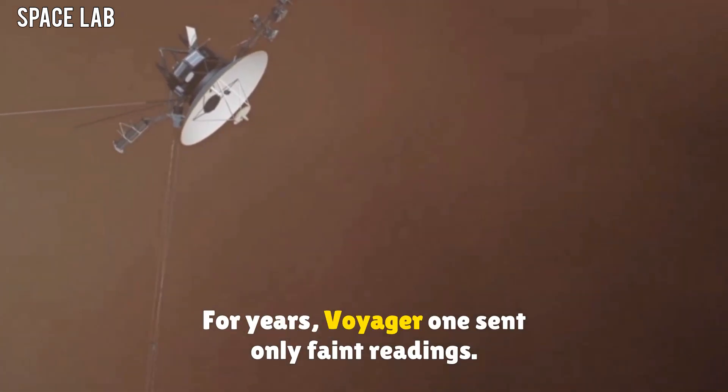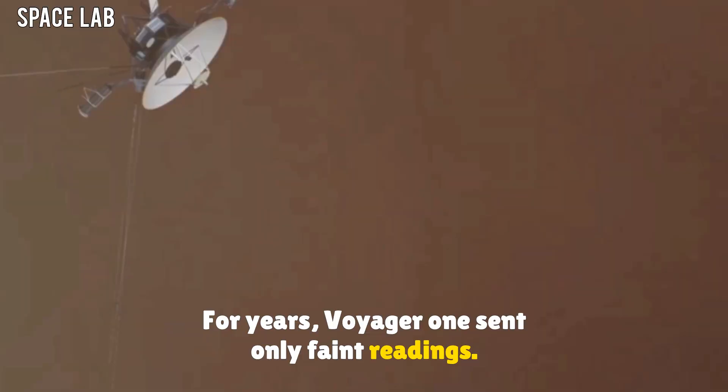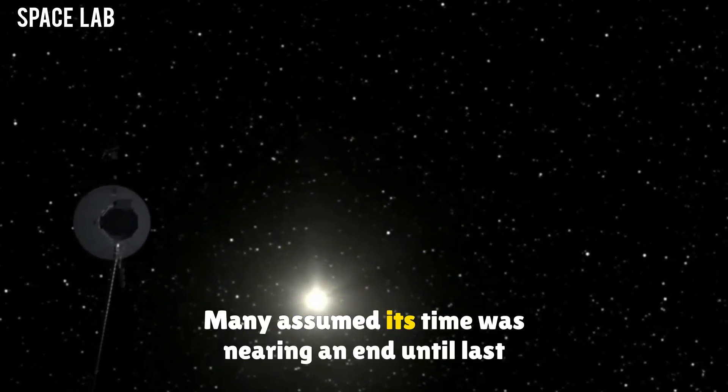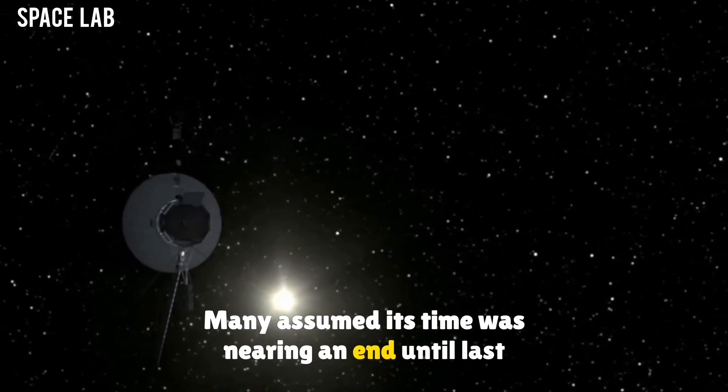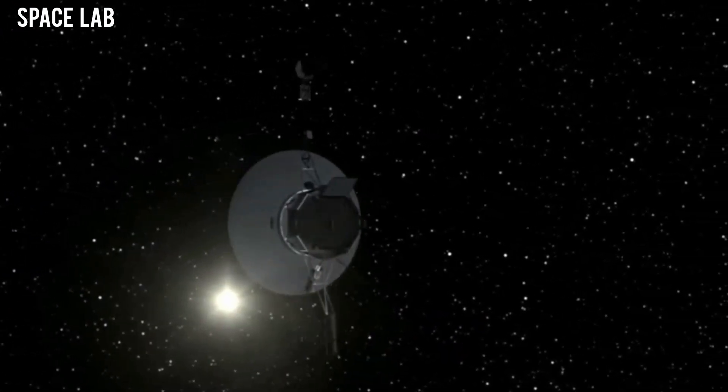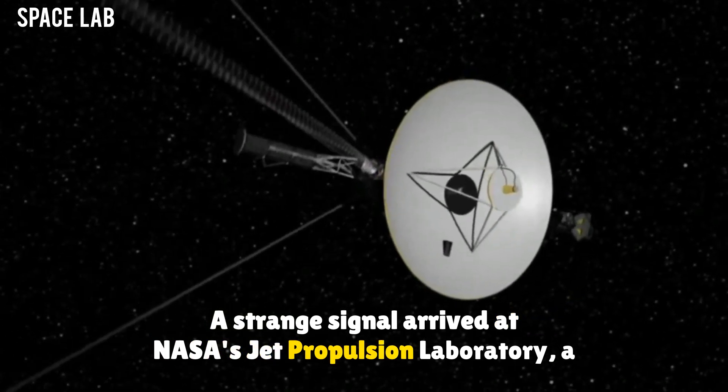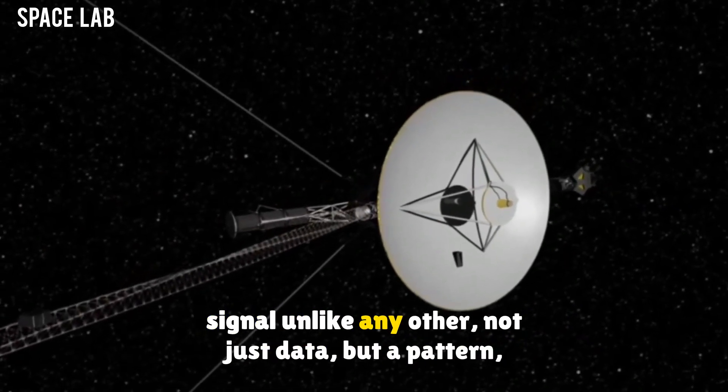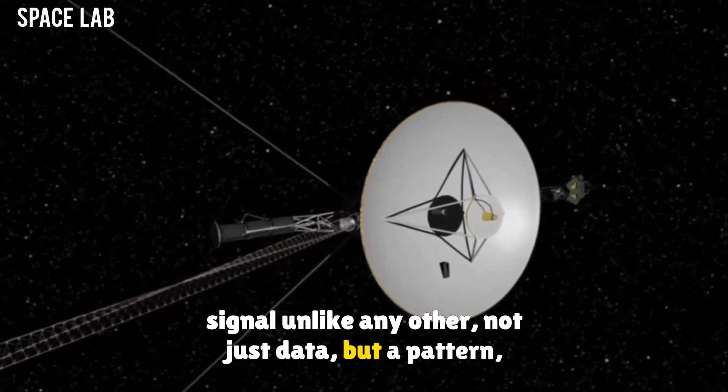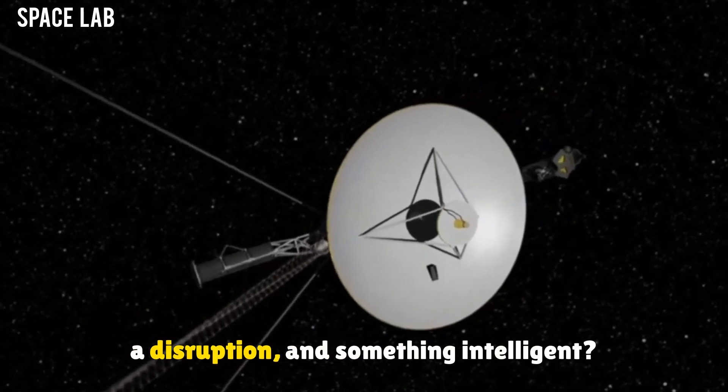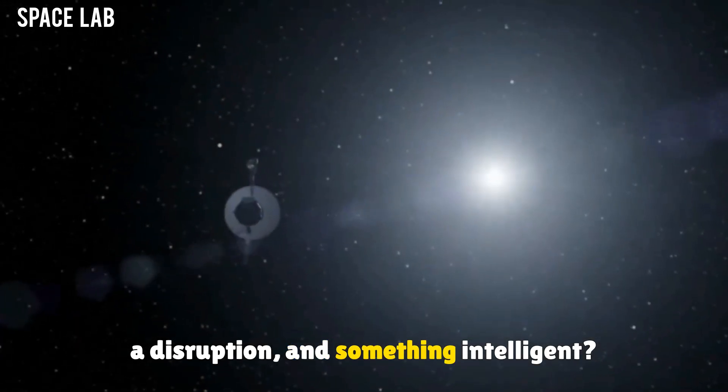For years, Voyager 1 sent only faint readings. Many assumed its time was nearing an end. Until last month. A strange signal arrived at NASA's Jet Propulsion Laboratory. A signal unlike any other. Not just data, but a pattern. A disruption. And something intelligent?